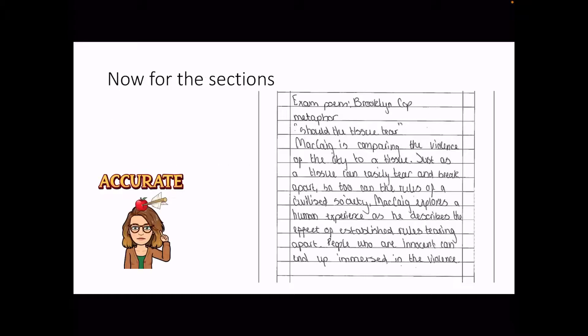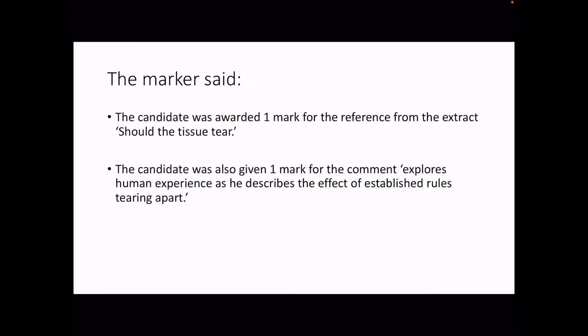Now for the other sections — this is the easy bit. For the exam poem, the example given is: 'Should the tissue tear — McCaig is comparing the violence of the city to a tissue. Just as a tissue can easily tear and break apart, so too can the rules of civilized society. McCaig explores a human experience as he describes the effect of established rules tearing apart — people who are innocent can end up immersed in violence.' The SQA said the candidate was awarded one mark for the reference 'should the tissue tear' and one mark for the comment about exploring human experience.